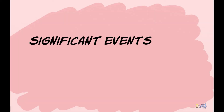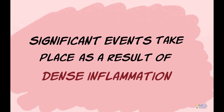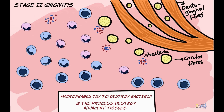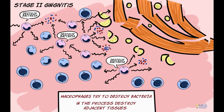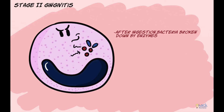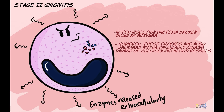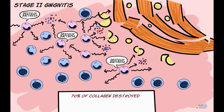There are some important events that happen as a result of this dense inflammation. After accumulation of inflammatory cells in the connective tissue, the cells in an attempt to destroy invading bacteria also cause collateral damage to surrounding tissues. On ingestion of bacteria, leukocytes produce numerous enzymes and free radicals to degrade bacterial agents. However, the enzymes are also released extracellularly, causing damage to surrounding tissues, especially vascular tissue and collagen. As a result, 70% of collagen is damaged, predominantly the circular fibers and the dento-gingival fibers.